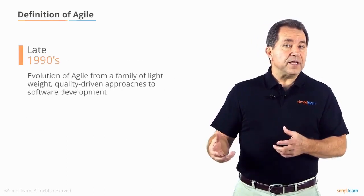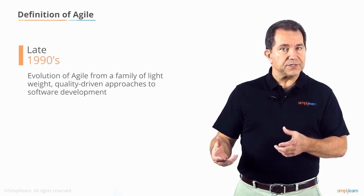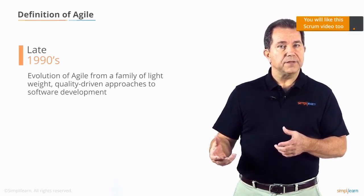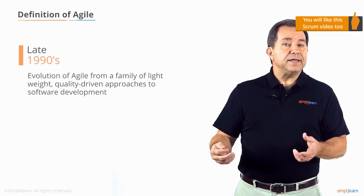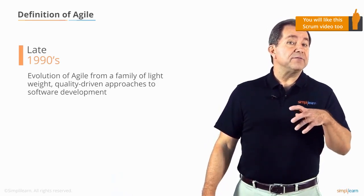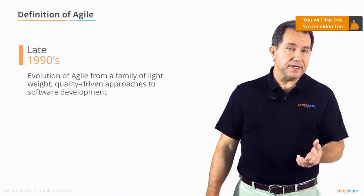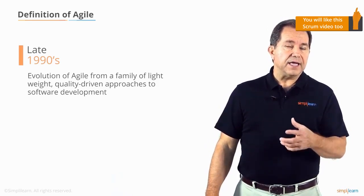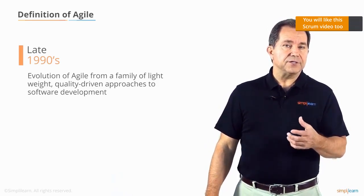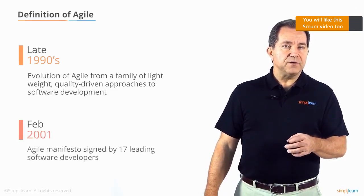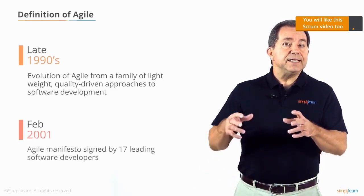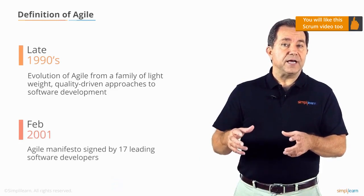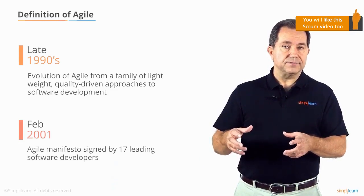Agile is a family of lightweight, quality-driven approaches to software development which evolved in the late 1990s in response to the burden of heavy documentation and frequent change. In February 2001, 17 leading developers signed the Agile manifesto.